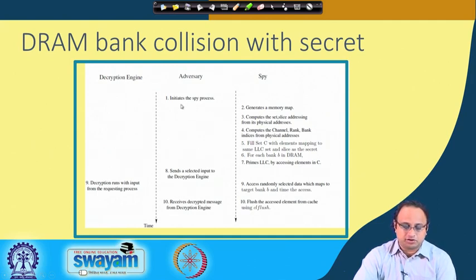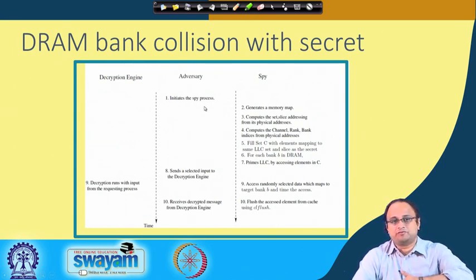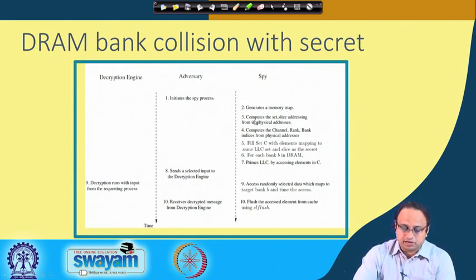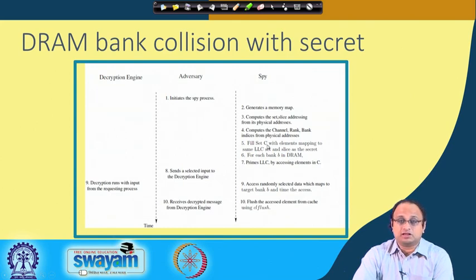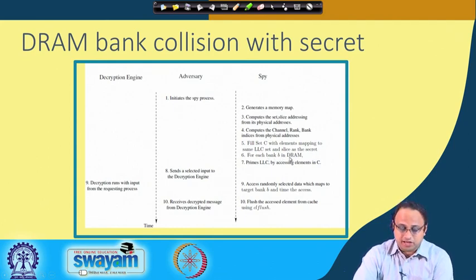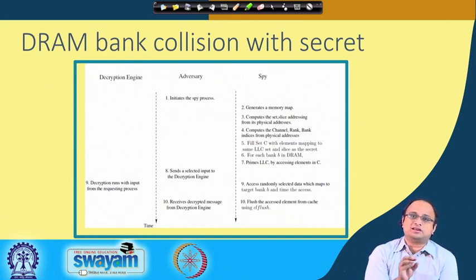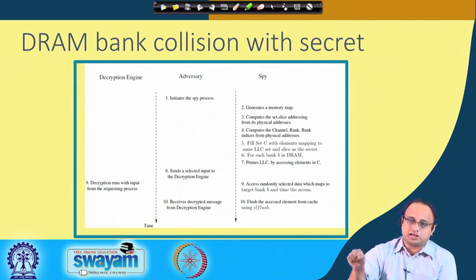Here is the complete elaboration of the attack. There is an adversary which initiates the spy process. You have to decipher the eviction set every time in situ because the mapping from the virtual address to the physical address changes when you run a different process. So you generate the memory map, compute the set-slice addressing from the physical addresses, compute the channel, rank, and bank indices from the physical address using the equations just discussed. Then you calculate the eviction set C and prime it with elements mapping to the same LLC set and slice as the secret.